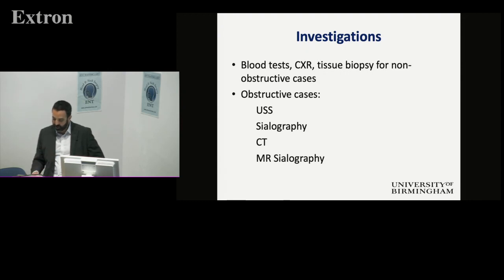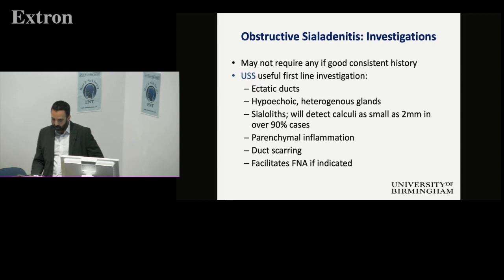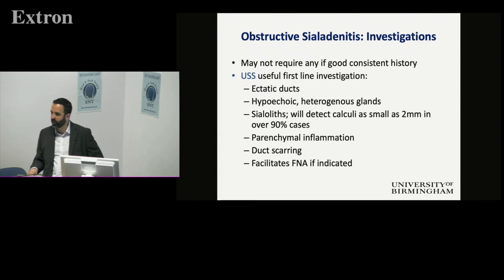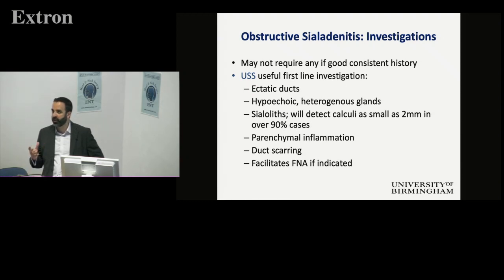Cross-sectional imaging either with CT or MRI is also useful. With ultrasound you can target anything that looks abnormal with a needle as well. I don't do freehand parotid FNAs — I always do it either with ultrasound myself or send it off for ultrasound-guided biopsy. If someone's got a diffuse swelling, it's really helpful to see what's going on within the glands and target your needle accordingly.